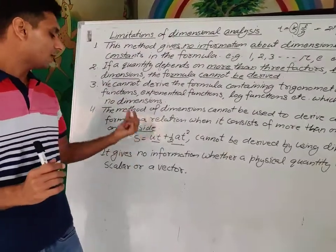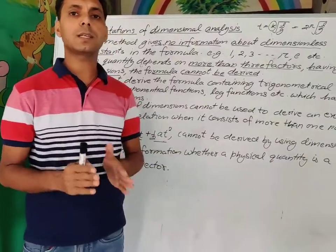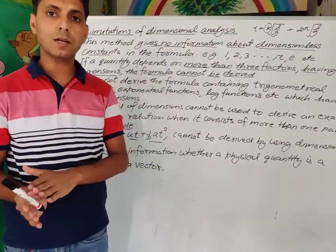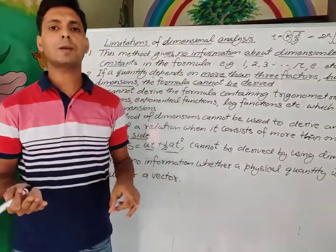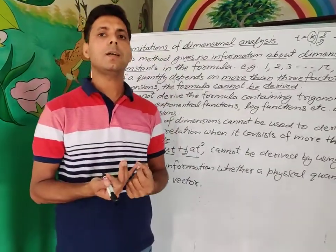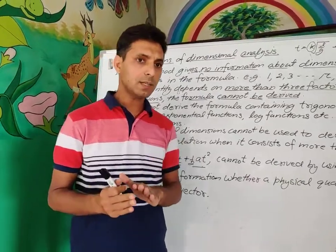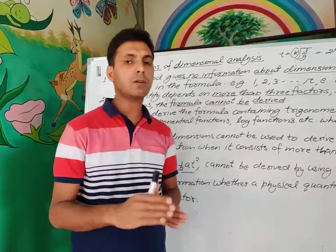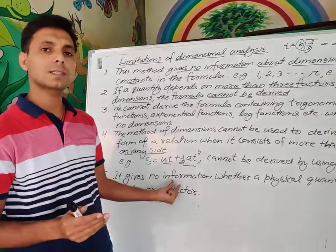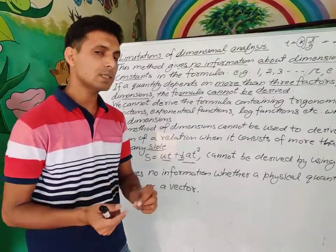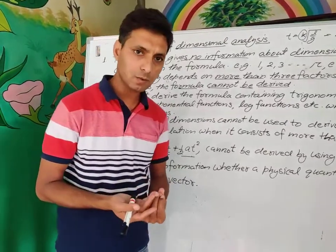Last limitation — a very simple one: dimensional analysis gives no information whether a physical quantity is a scalar quantity or a vector quantity. For example, speed and velocity have the same dimension, that is L¹T⁻¹. So we don't know which quantity is scalar and which is a vector quantity.